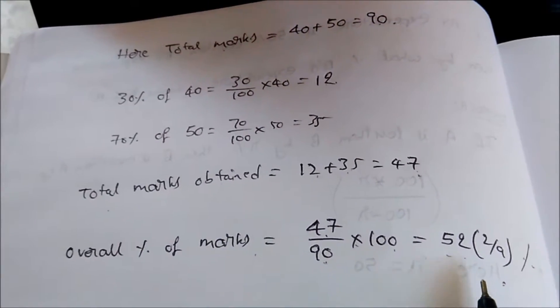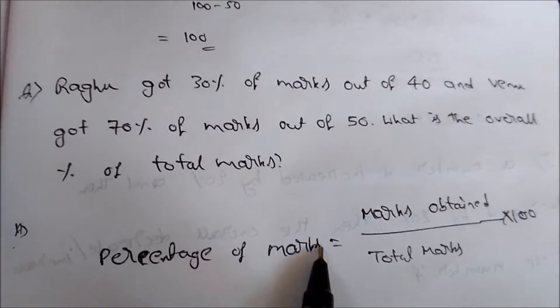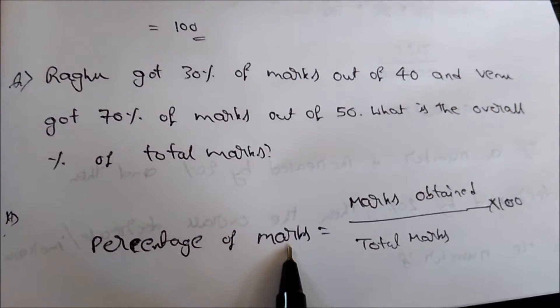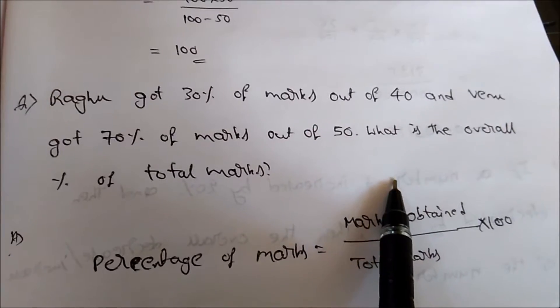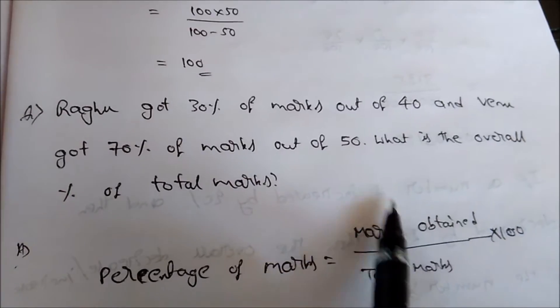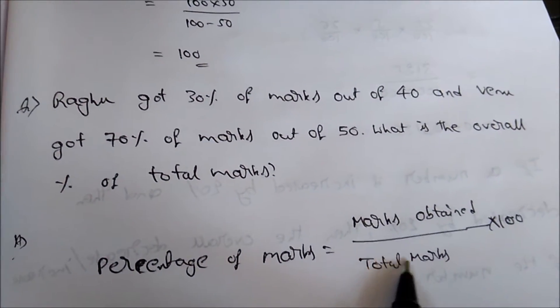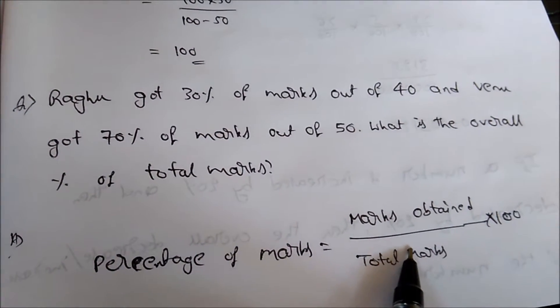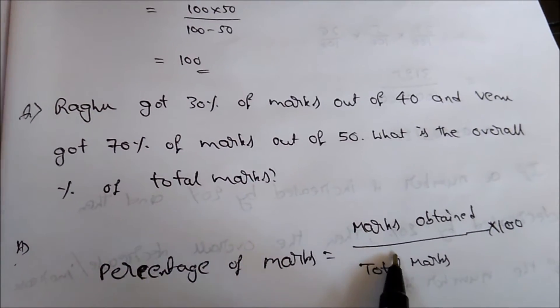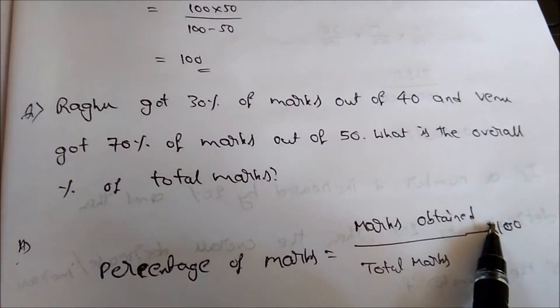To solve problems of this kind, just analyze the question and implement this simple formula to get the answer. For percentage, always remember: marks obtained goes on top, and total marks — the total for which they need to perform — goes on the bottom, multiplied by 100.